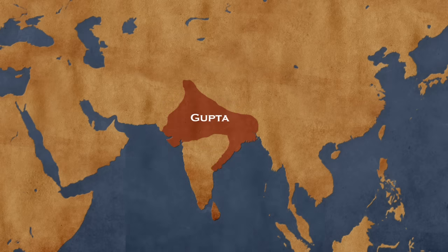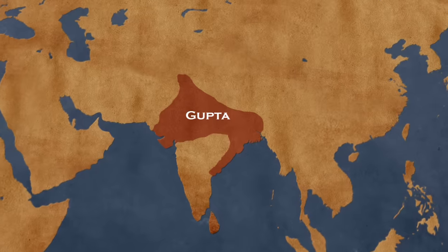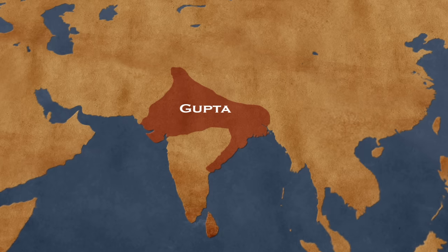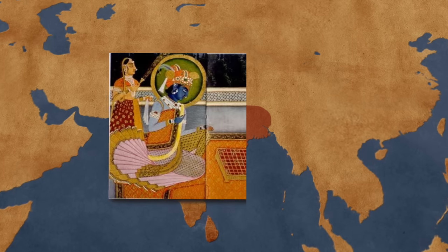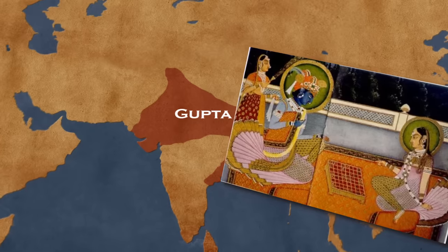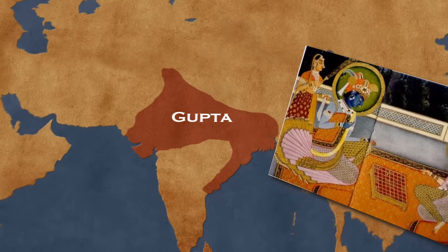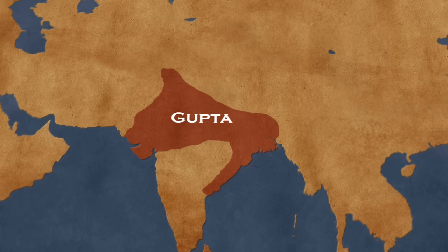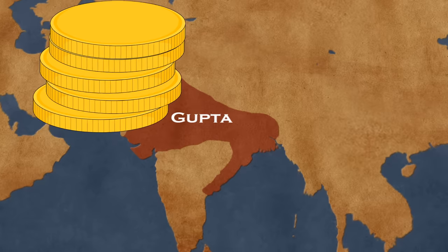The Gupta Empire was an ancient Indian Empire existing from the mid to late 3rd century CE to 543 CE. At its zenith in the 4th and 5th centuries, it covered much of the Indian subcontinent, especially in the north. A period of overall prosperity and growth followed for the next two and a half centuries, which came to be known as a Golden Age in India's history.